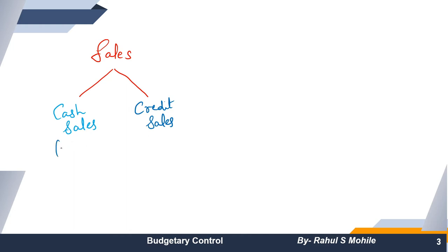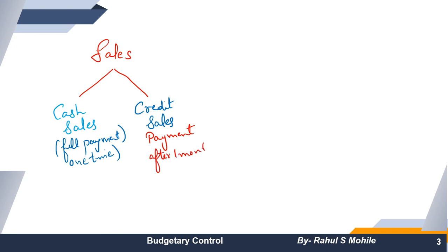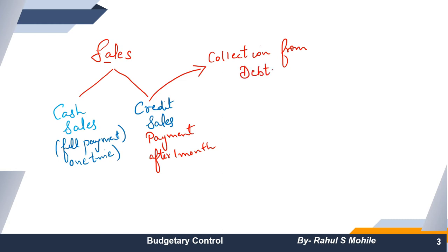Cash sales का मतलब है आपने full payment तुरंत — one time — कर दिया. But credit sales में payment तुरंत नहीं होता; payment after one month, two months, या three months के बाद होती है. Question में sales में से कुछ percentage cash sales होंगे और कुछ percentage credit sales. Credit sales को इस chapter में हम नाम देंगे — that name is called as 'collection from debtors,' because sales is always related with debtors. यह नाम याद रखना काफी important है.